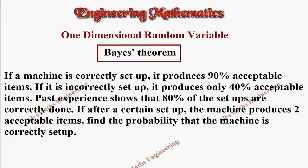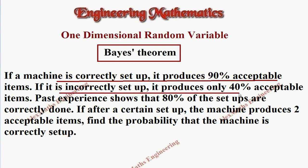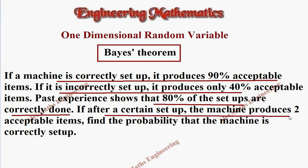We have given: if a machine is correctly set up, it produces 90% acceptable items. If it is incorrectly set up, it produces only 40% acceptable items. And 80% of the setups are correctly done. Suppose, after a certain setup, the machine produces 2 acceptable items — find the probability that the machine is correctly set up.